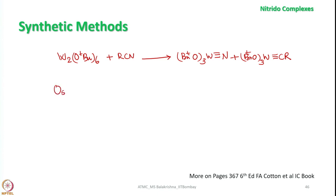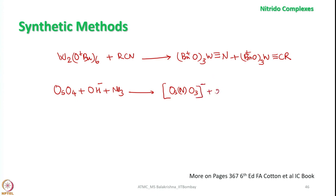And if we take osmium tetroxide and treat with base, it can also form a nitride complex. It is giving three electrons; as a result, one negative charge is there on this one. And of course, whenever we write like this you should understand that we have a triple bond between metal and nitrogen.